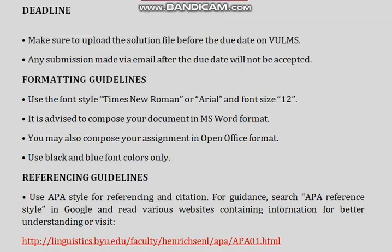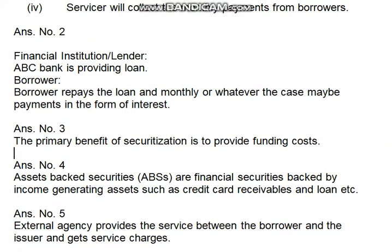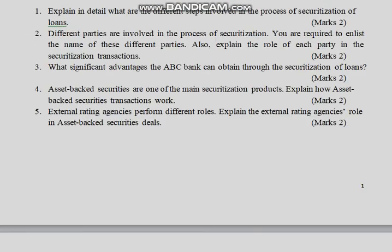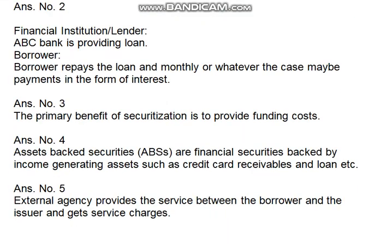Requirement number 4 relates to asset-backed securities. If we don't have money, then we can do credit shopping or loan shopping, or whatever the case. Number 5: external rating agencies perform different roles — banks hire third parties, and their job is to provide their service between the broker and issuer, for which they receive their service fee. Thank you students, thank you all.